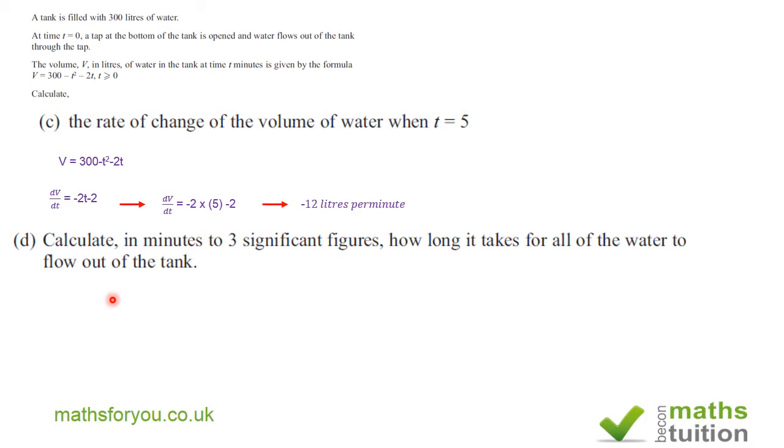For section d, we are asked to calculate in minutes to 3 significant figures how long it takes for all of the water to flow out of the tank. Now I'm going to bring this formula down and rearrange it by exchanging v to the right hand side and 300 minus t squared minus 2t to the left hand side.